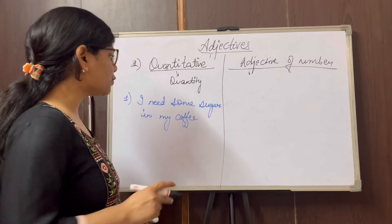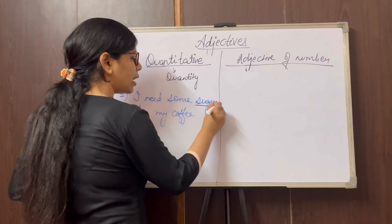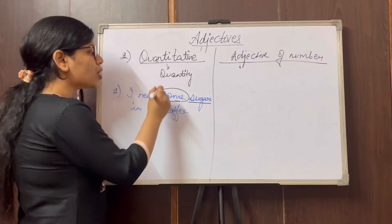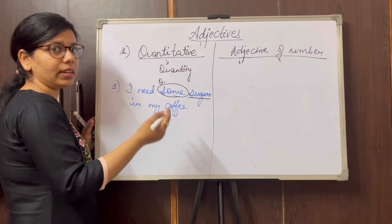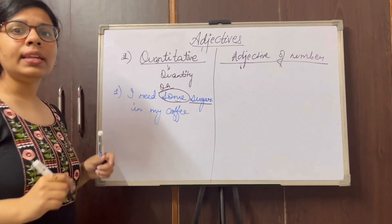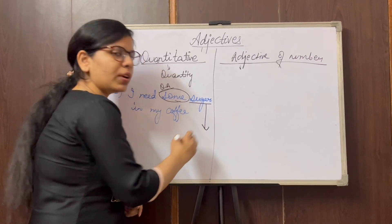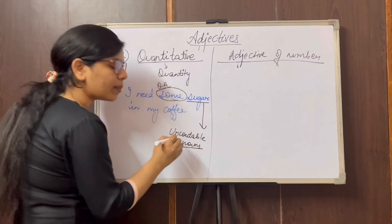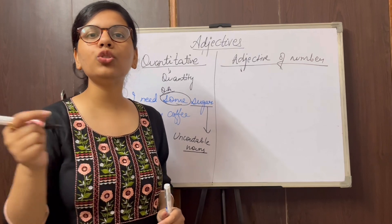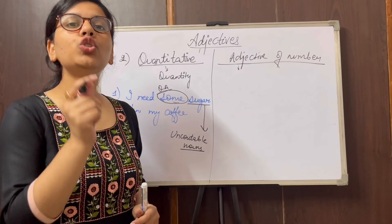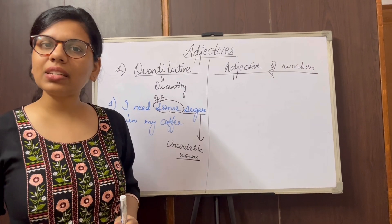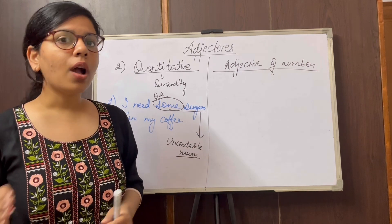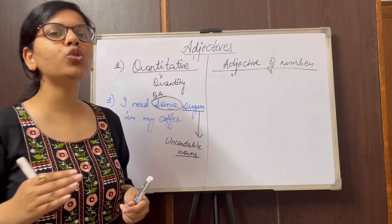If I ask you to identify the noun, you can figure out that one of the nouns is 'sugar,' and how much sugar do we need — what quantity? That is 'some.' So 'some' becomes your adjective of quantity or quantitative adjective. Notice that we have used this adjective with 'sugar,' which is an uncountable noun — something that cannot be counted. We cannot count sugar one, two, three; instead we say two cubes of sugar.